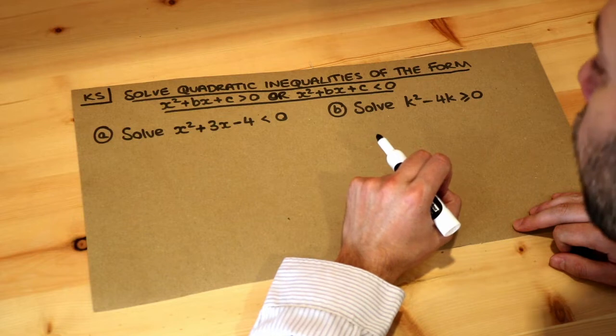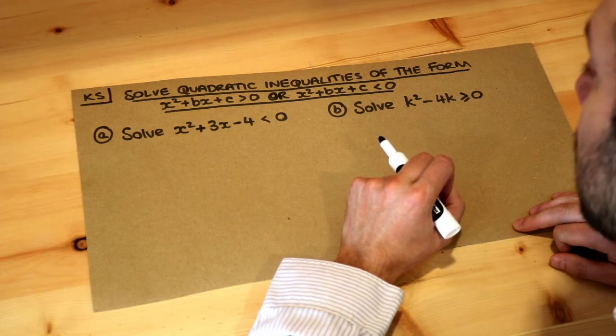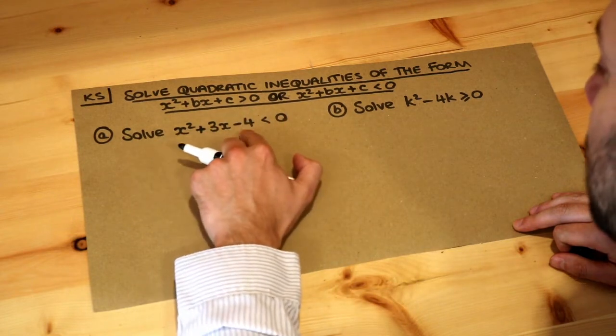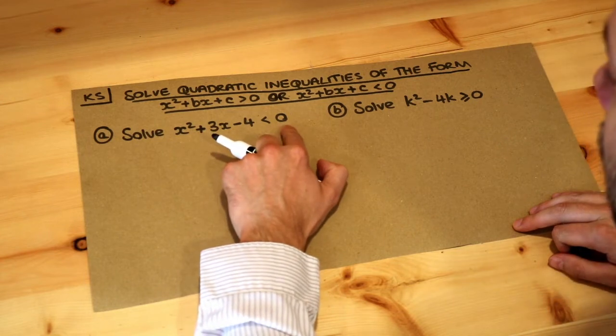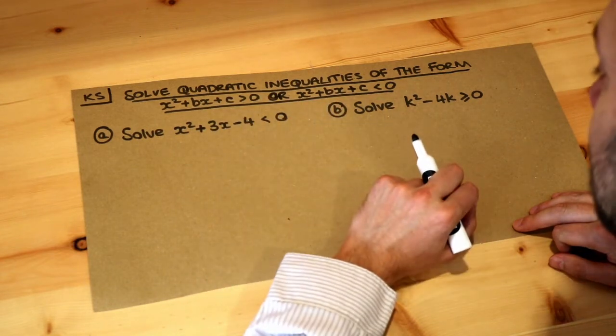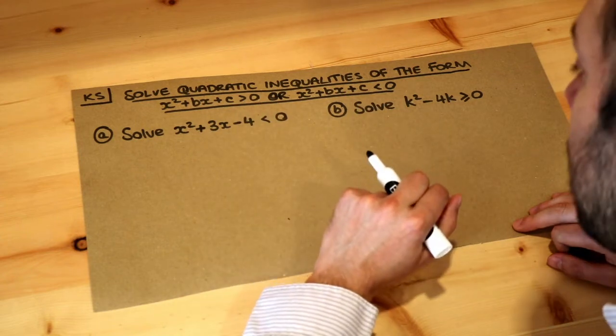Now if you're watching this video I'm assuming you already know how to solve a quadratic equation. So if I had x squared plus 3x minus 4 equals zero then you should know how to be able to solve that because we're going to do a very similar method here.